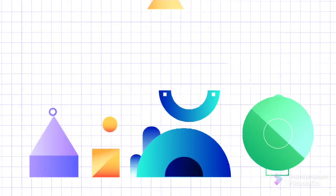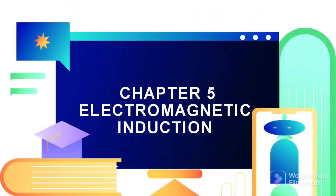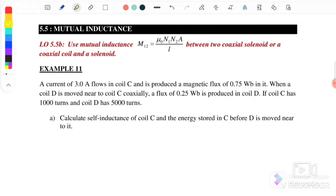Welcome back to my channel. Today we will continue with Chapter 5: Electromagnetic Induction. In this video we are going to discuss Section 5.5, Mutual Inductance. The mutual inductance equation for a solenoid is M equals mu-naught times N1 times N2 times A overlap.